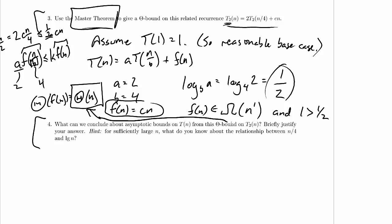Well, let's start with what we know about the relationship between n/4 and log n. Asymptotics should tell us right away that n/4 is an element of little omega of log n. Right, so n/4 grows faster.